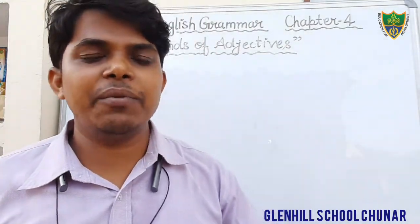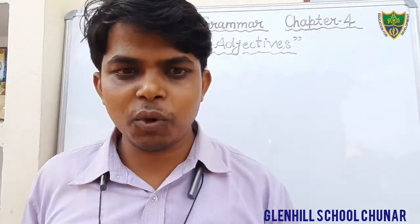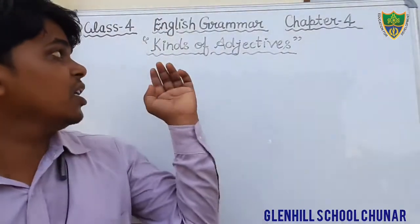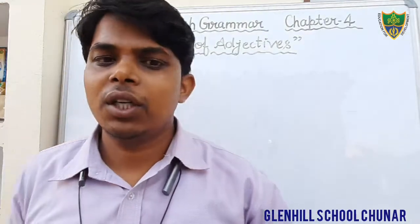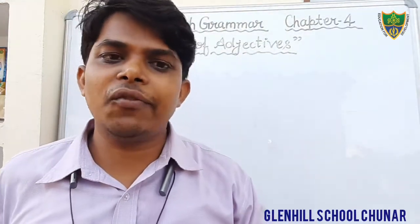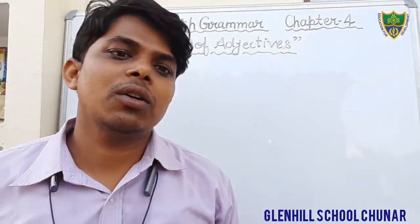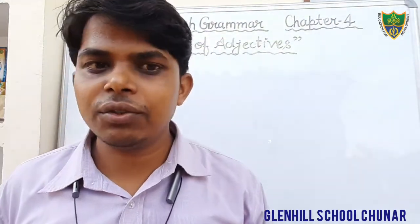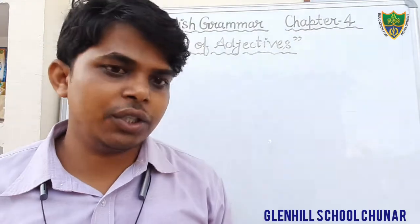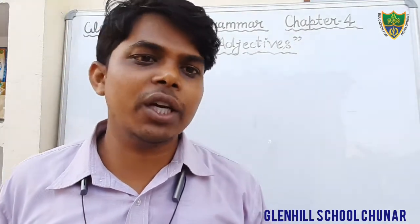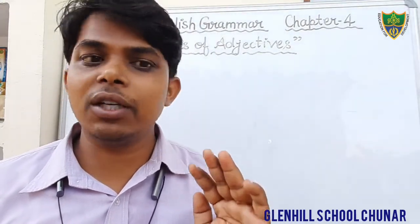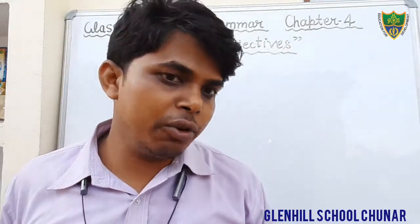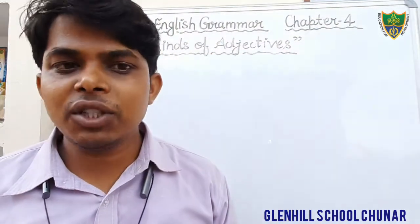Dear students, in the previous classes we were discussing the grammar portion, in which we were discussing chapter number 4, that is kinds of adjectives. In this chapter, we have read the definition of adjective, features of an adjective, and kinds of adjectives. There are three kinds given in your book: qualitative adjective, quantitative adjective, and demonstrative adjective.